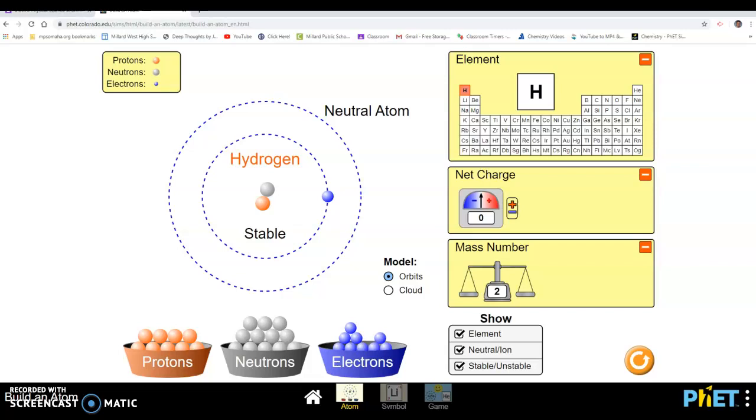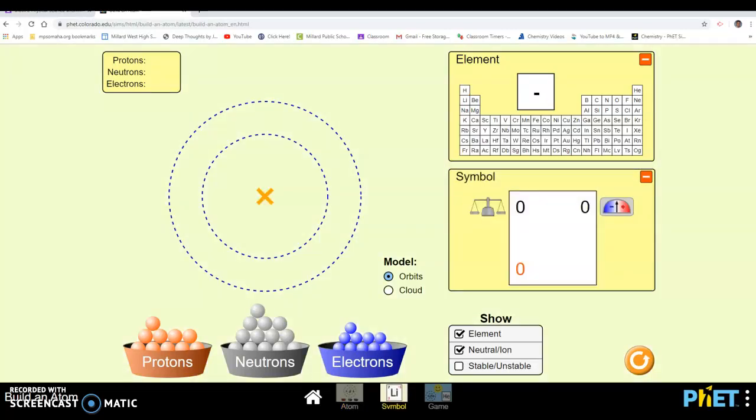This is going to be similar. And once again, I think I might turn this guy on so we can see stable and unstable. This time it's a little different. Instead of just building the model, it's going to show what this should look like on the periodic table. Once again, you can do just three new atoms and we're going to see what happens to this section here on the table.